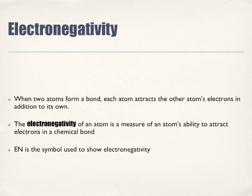Electronegativity is about attracting electrons. When two atoms form a bond, each atom attracts the other atom's electrons in addition to its own. So the electronegativity of an atom is the measure of an atom's ability to attract the electrons that are formed in a chemical bond.